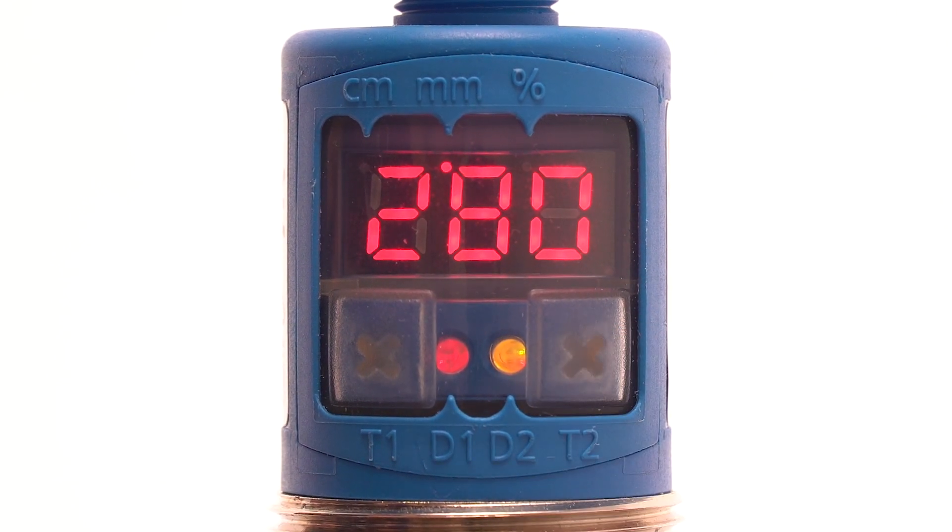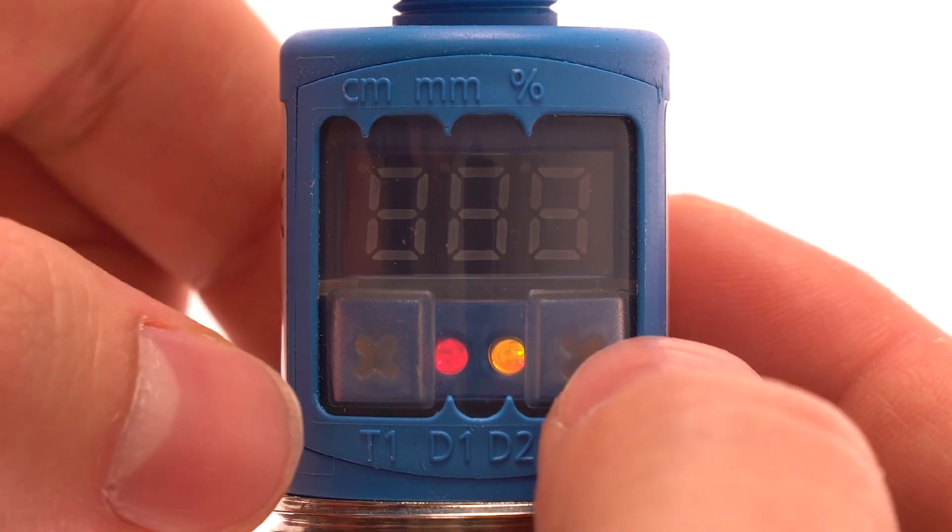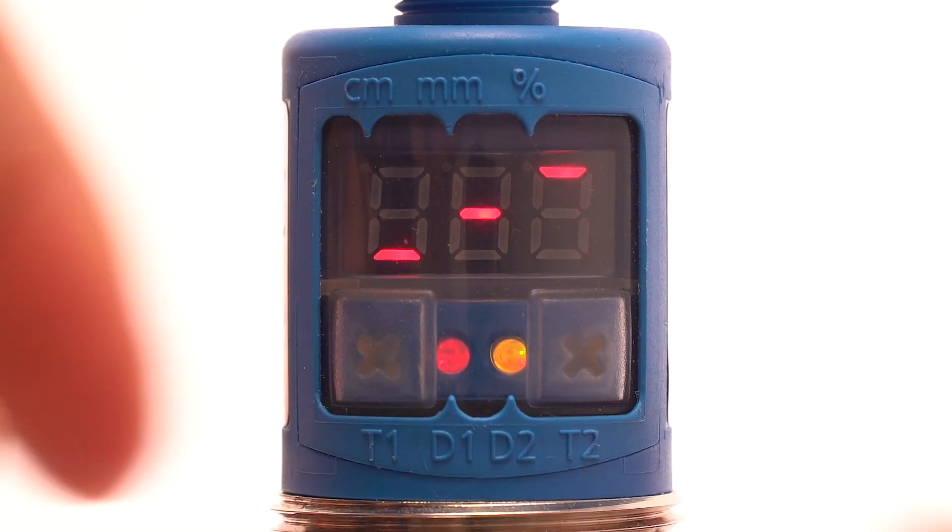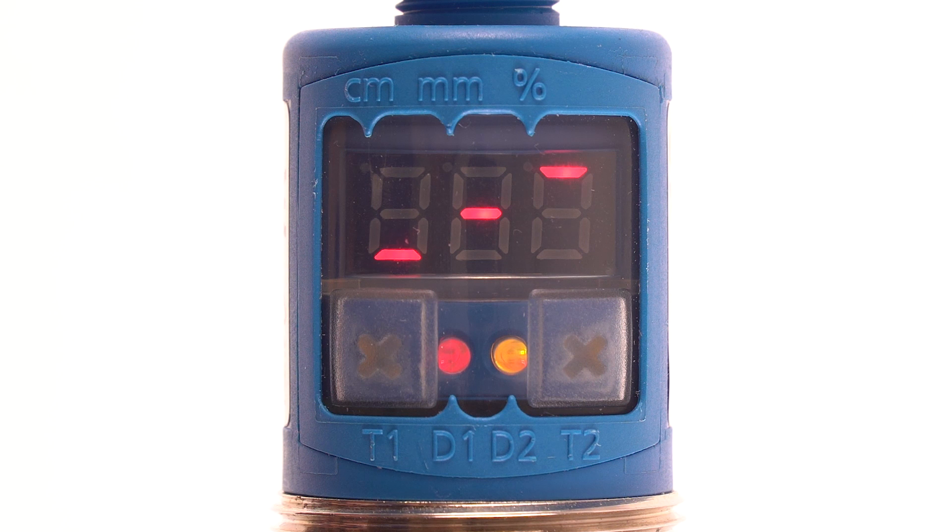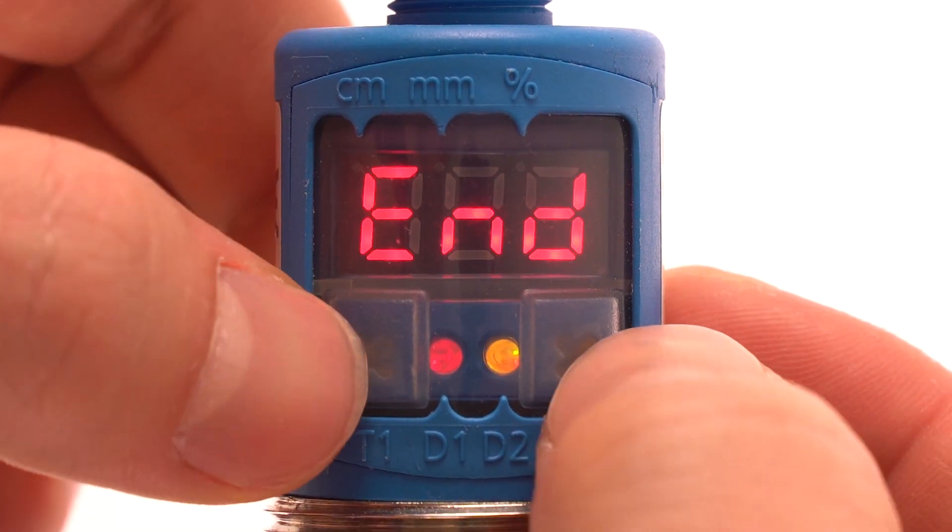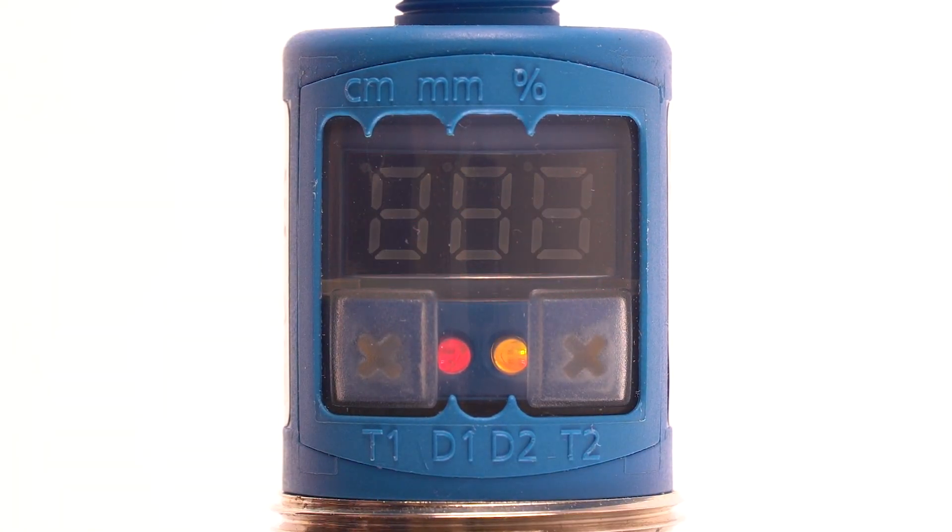Simultaneously press T1 and T2 again for the next step. Select the rising falling output characteristic. Simultaneously press T1 and T2 again until end appears.